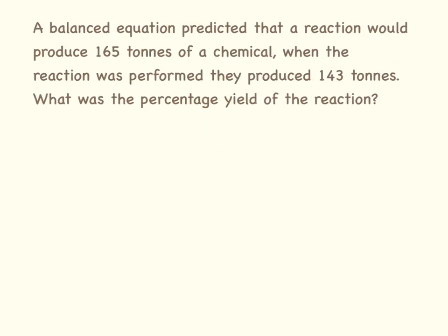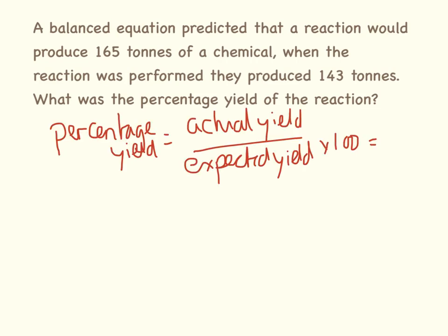A balanced equation predicted that a reaction would produce 165 tonnes of a chemical. When the reaction was performed they produced 143 tonnes. What is the percentage yield? Our actual yield was 143 tonnes, our expected yield was 165 tonnes, and we times that by 100. 143 divided by 165 equals times 100. I'm going to give my answer to the same number of significant figures I was using in the question, so I'm going to say it is 80%.